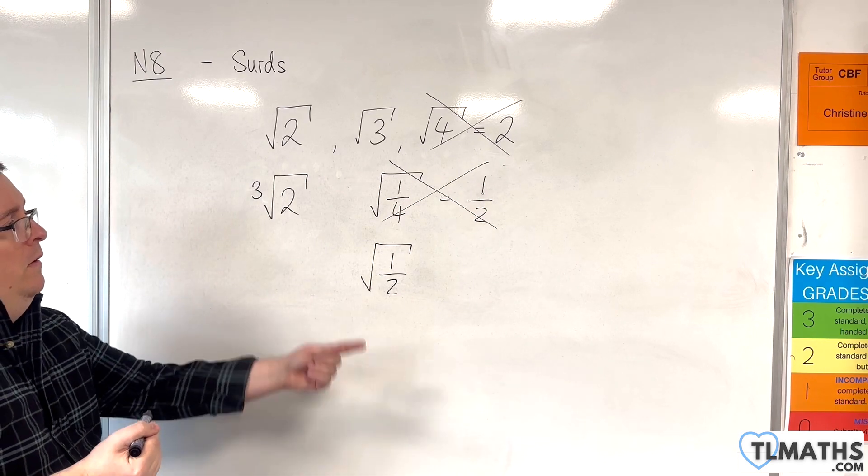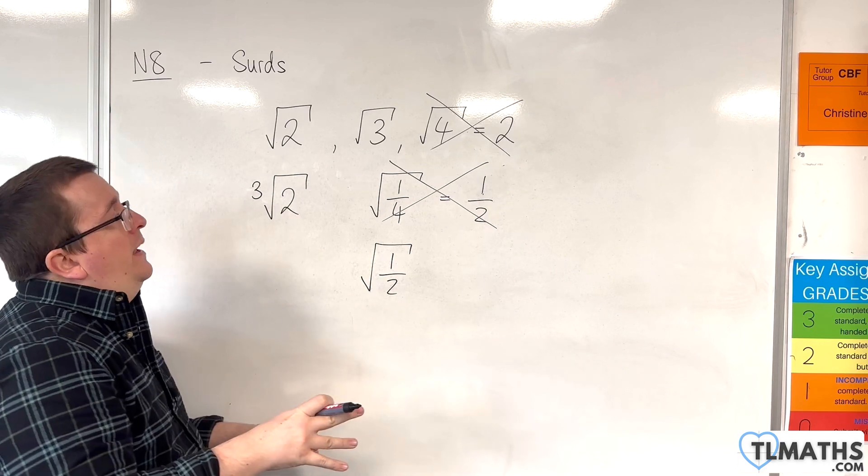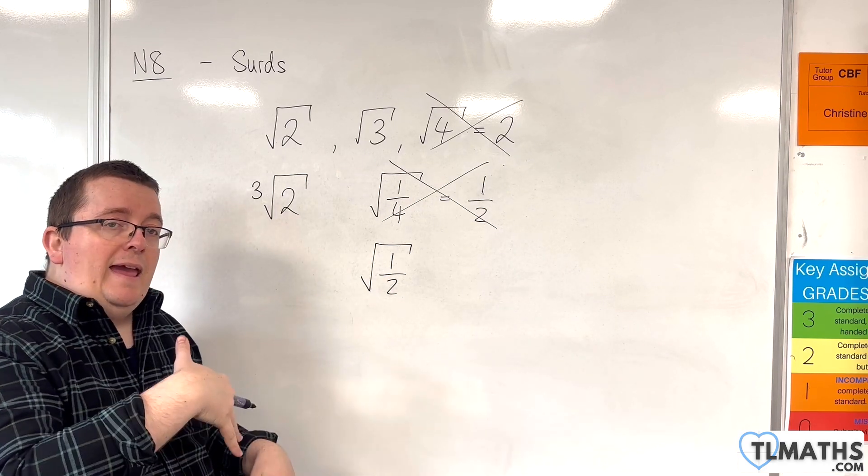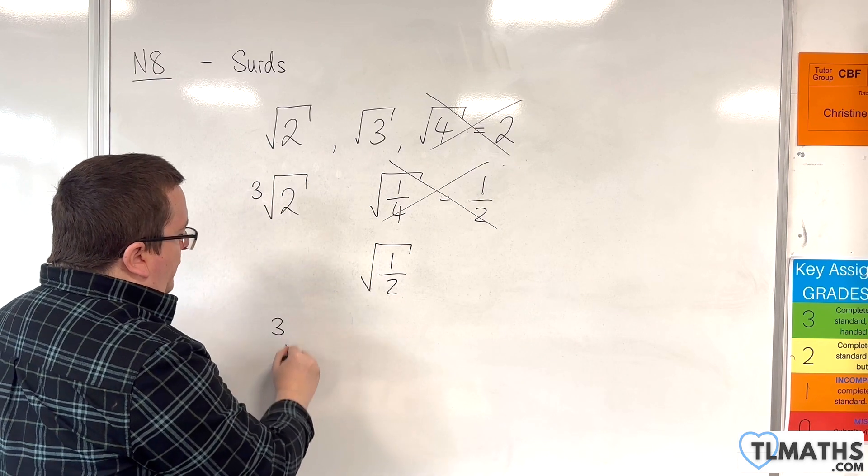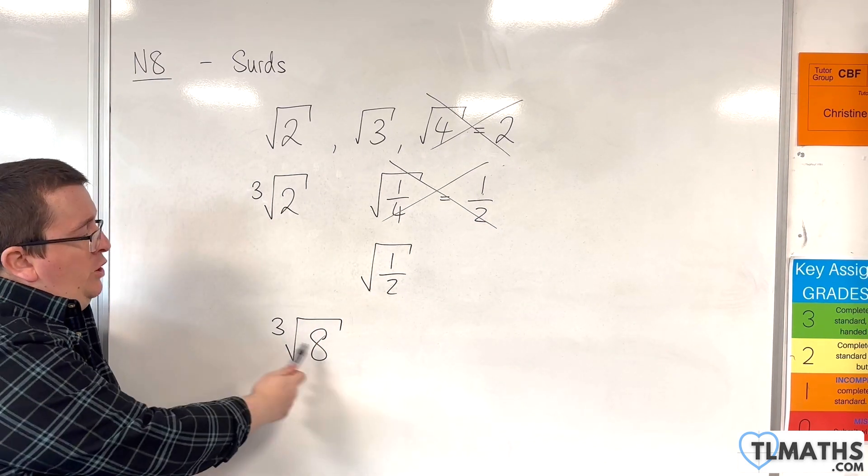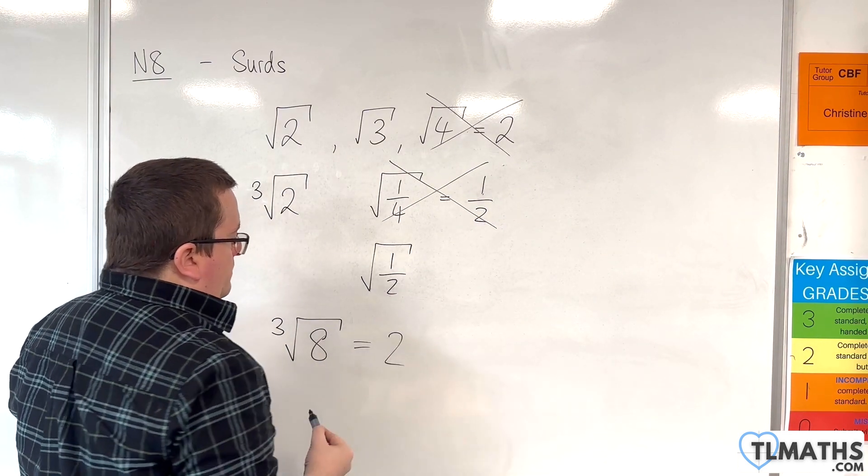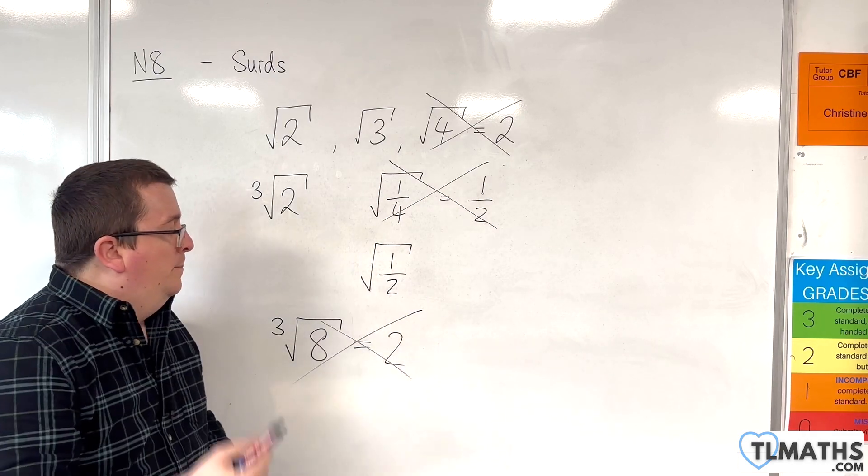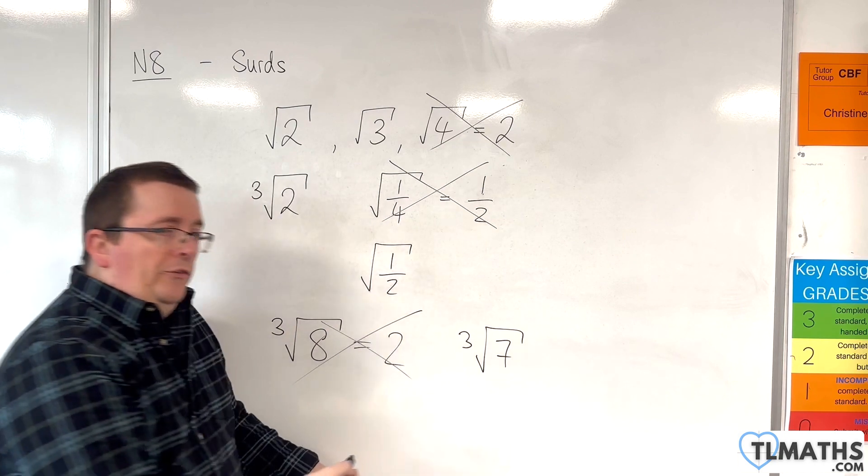So what you're looking for to identify whether a number is a third or not is if you're square rooting a square number, or if you are cube rooting a cube number. So the cube root of eight is not a third because that is two. But the cube root of seven, that is a third.